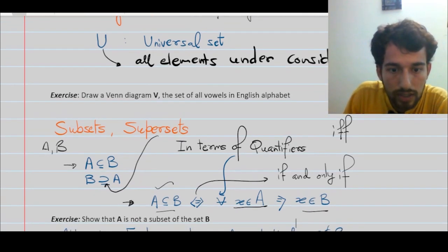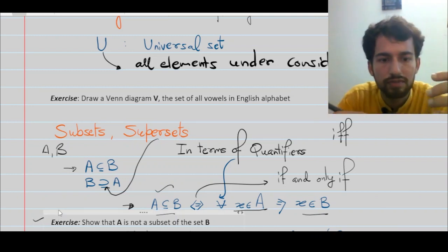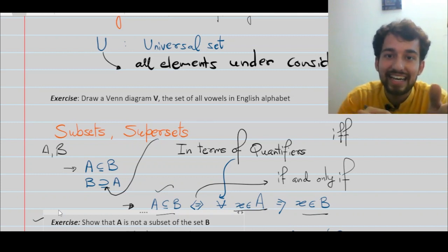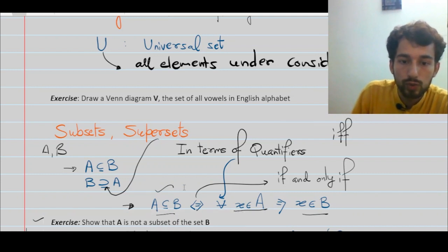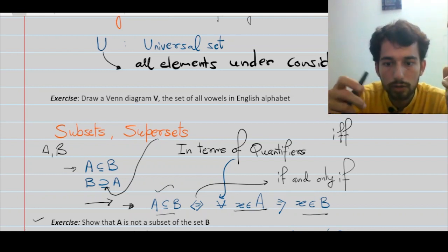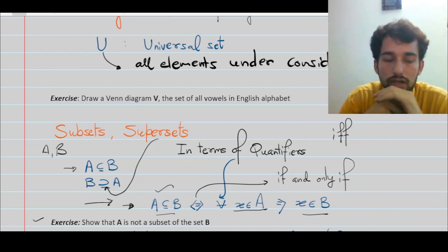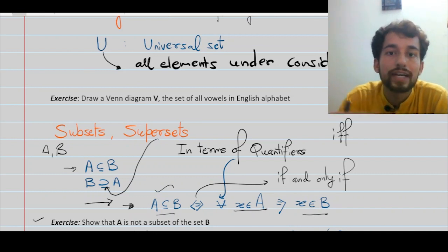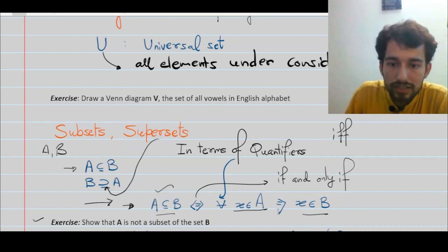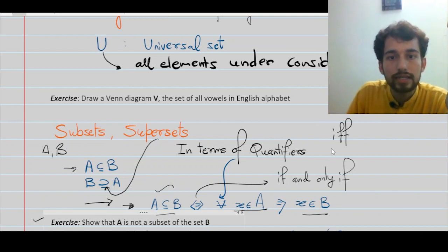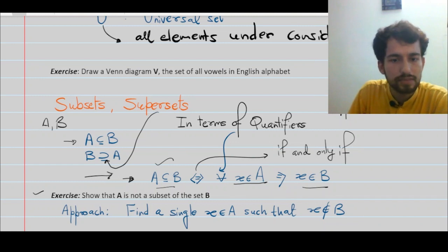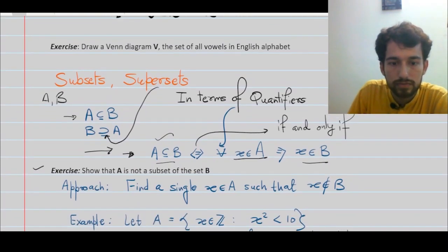Here is a good exercise: if you want to prove that a set A is NOT a subset of set B, what would be your approach using this quantifier-based definition? Think about showing the negation. The answer is: if you can find at least one element in set A which is not a member of set B, then A is not a subset of B.